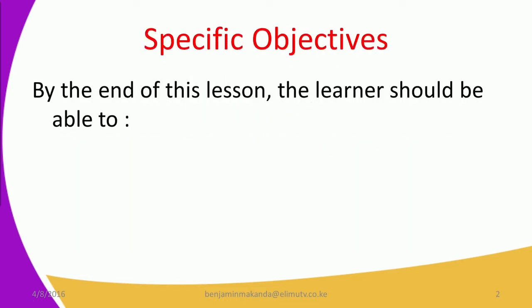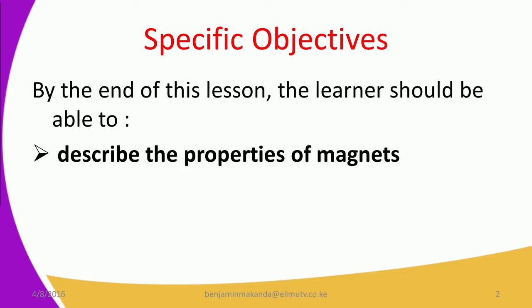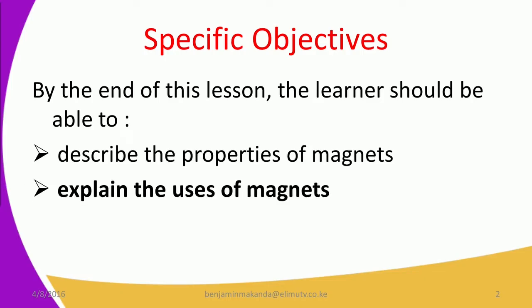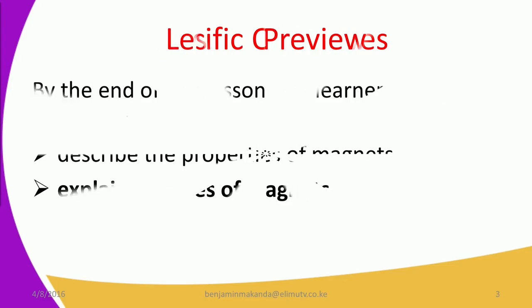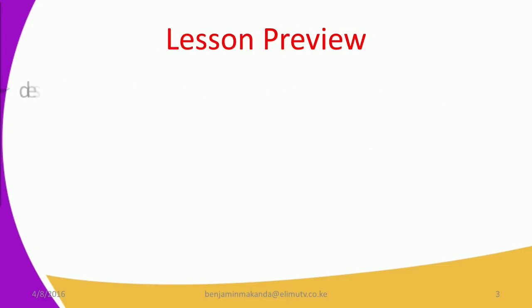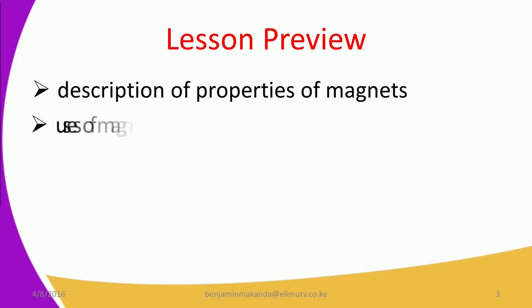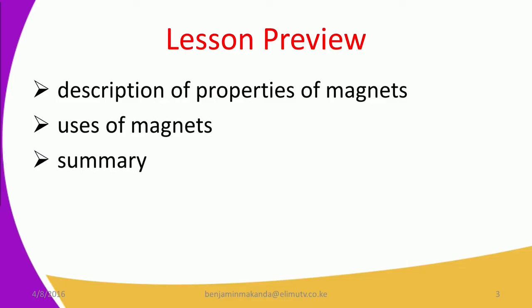To begin our lesson we want to look at the specific objectives. By the end of this lesson the learner should be able to describe the properties of magnets and explain the uses of magnets. In our lesson review we're going to look at the description of properties of magnets, uses of magnets, then the summary of the lesson followed by your assignment — that's the homework for the day.